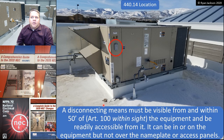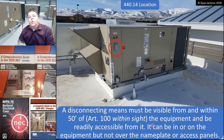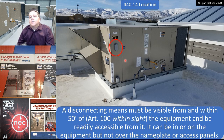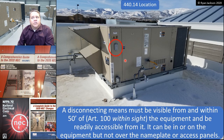It also has to be readily accessible from the equipment. So the disconnecting means must be within sight and readily accessible from the air conditioning equipment. It can be in or on the equipment, but not over the nameplate or any access panels. Here you can see that the disconnect is part of the unit — it's on the unit — and that's perfectly fine, as long as it's not over the nameplate or any access panels.